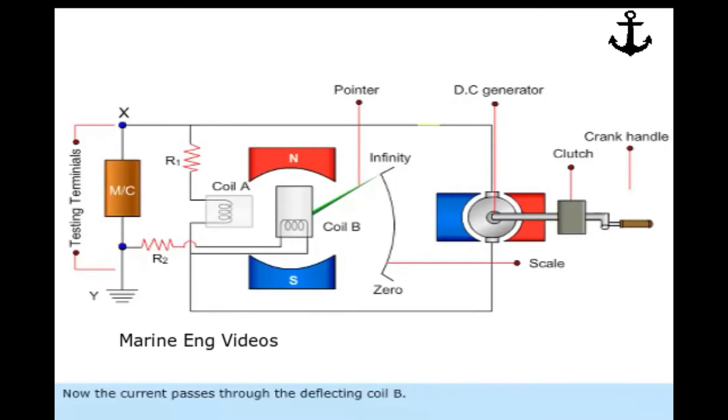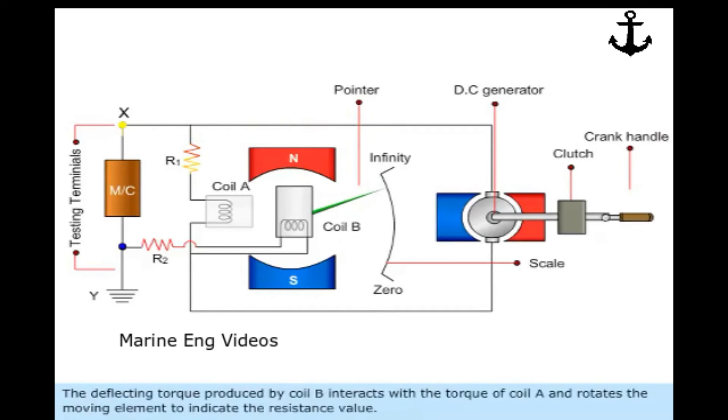The current passes through the deflecting coil B. The deflecting torque produced by coil B interacts with the torque of coil A and rotates the moving element to indicate the resistance value.